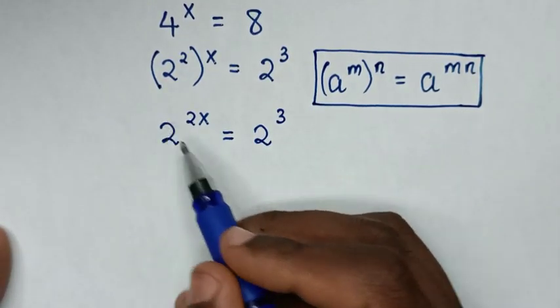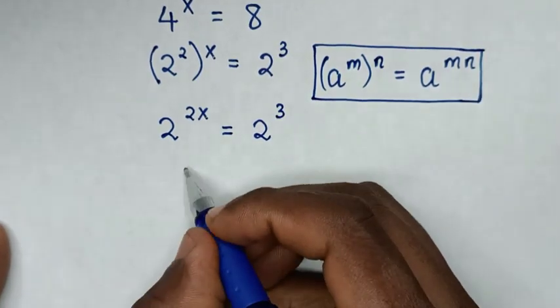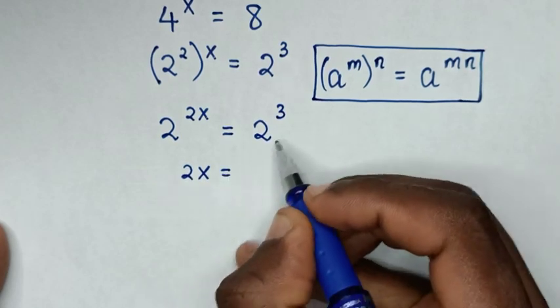Now in here, we have same base of 2, so we'll compare these powers, then it will be 2x is equal to 3.